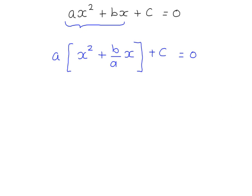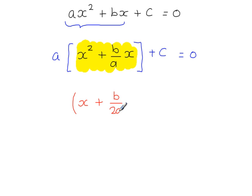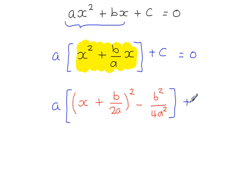And then completing the square for these terms. Taking half the coefficient of this term — so that would be b over a times a half, which gives you b over 2a — minus this term squared, and all of this was multiplied by a, plus the c. Multiplying out the square brackets, so the a multiplies here and with this fraction here.